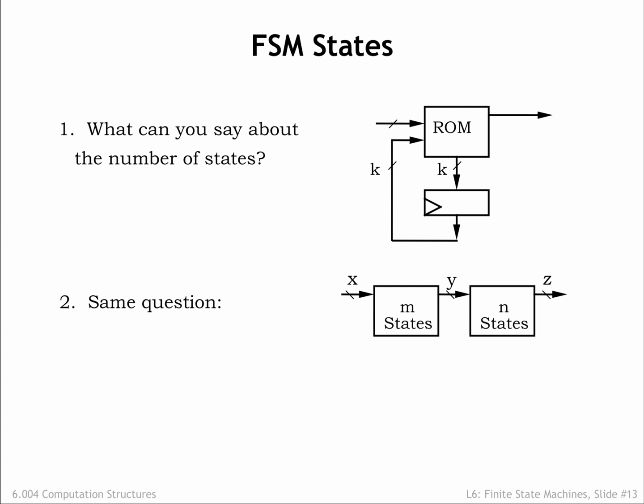This is because it may be possible for the first FSM to be in any of its m states while the second FSM is in any of its n states. Note that the answer doesn't depend on X or Y — the number of input signals to each of the component FSMs. Wider inputs just mean there are longer labels on the transitions in the state transition diagram, but doesn't tell us anything about the number of internal states.